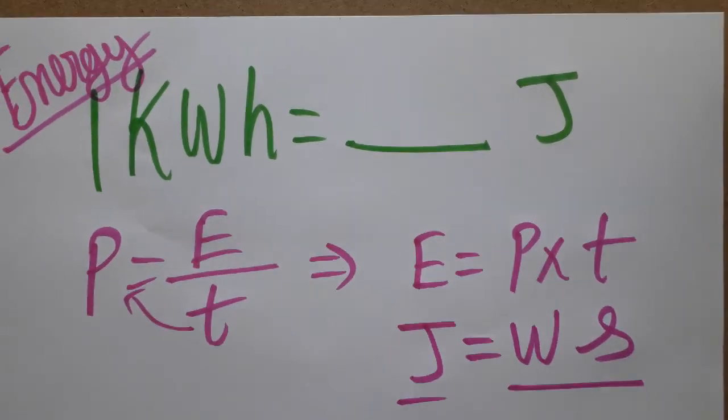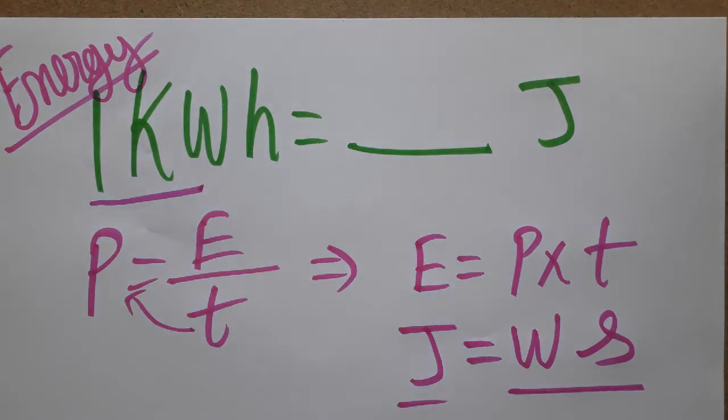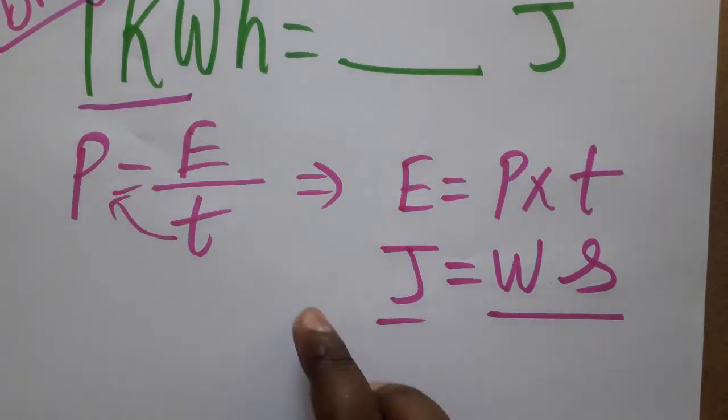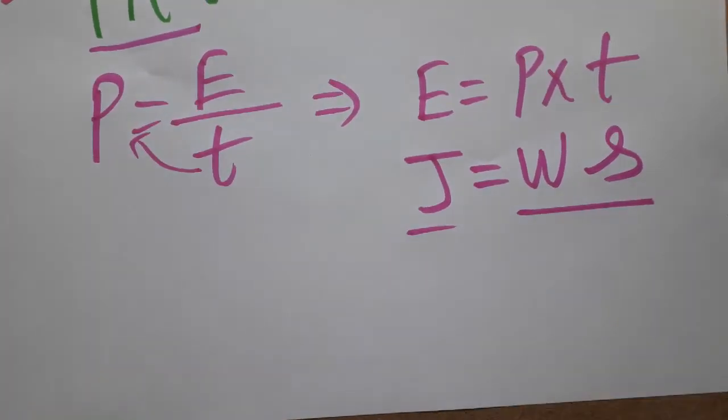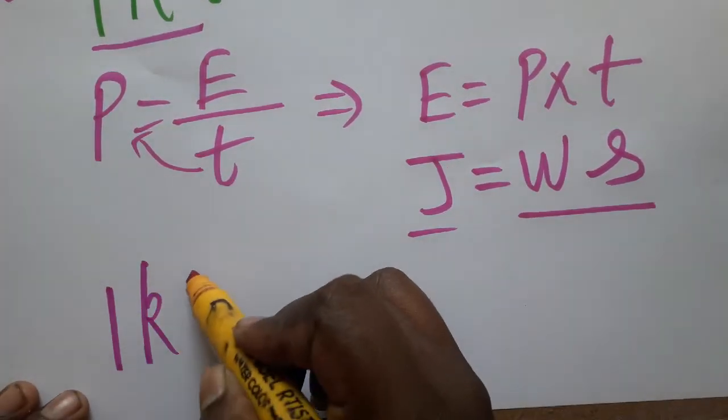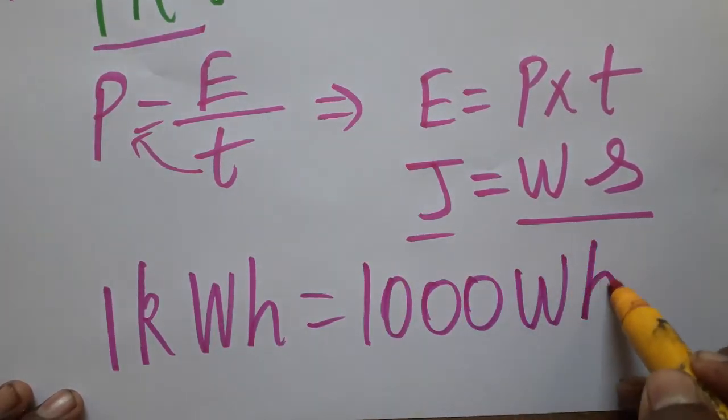See here, one kilowatt-hour is equal to joules. Only watt-second we can take as joules. So one kWh, I can take it as one kilowatt-hour, which is a thousand watt-hours.